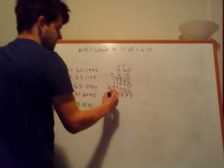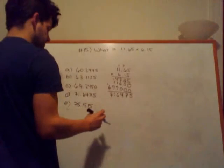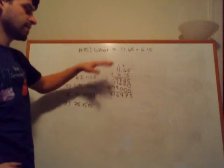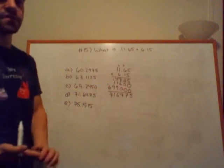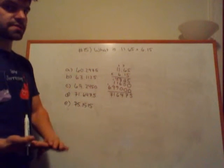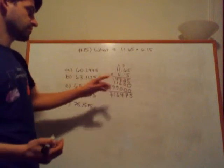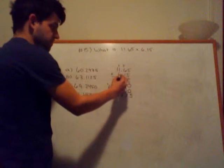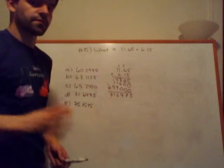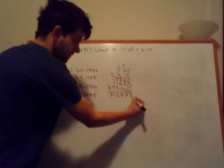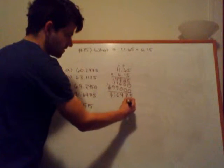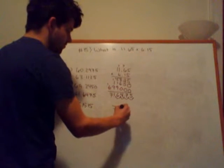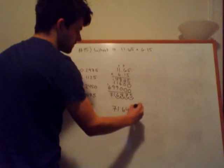Now accounting for decimal places, remember when you're multiplying decimals numbers with decimals, we're accounting for the total number of digits past the decimal places in the original question. So what I mean by that, this number right here has two numbers after the decimal place, this number here has two numbers after the decimal place, so we're going to be accounting for four total decimal places. Starting from the right, we're going to move left four places: one, two, three, four. So our final answer is 71.6475.